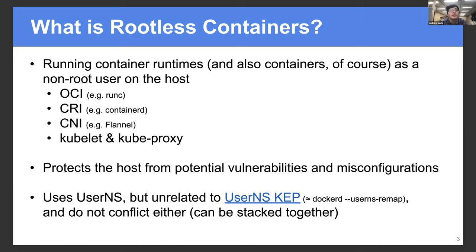This is useful for protecting the host from potential vulnerabilities and misconfigurations. Even in the rootless case, the attacker can gain normal user access on the host, but the attacker cannot gain root privileges. Rootless containers are implemented using a kernel feature called user namespaces, which allows mapping a non-root user to something like a root user but with a limited set of privileges.